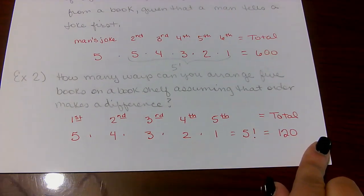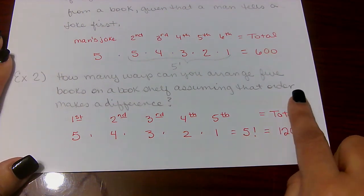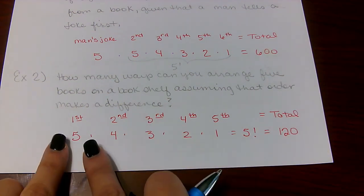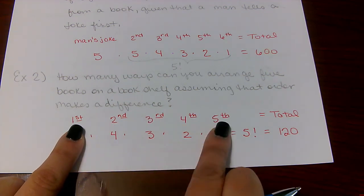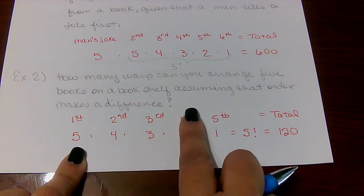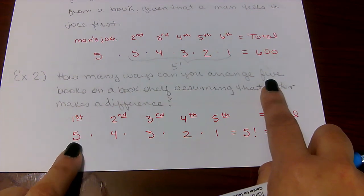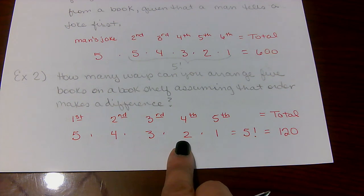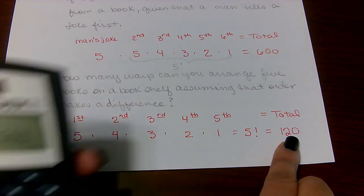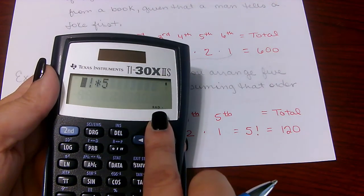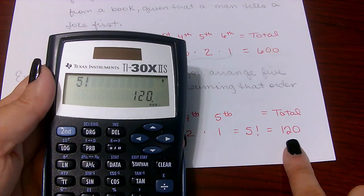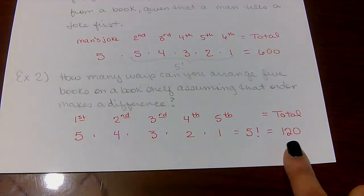Problem two: how many ways can you arrange five books on a bookshelf, assuming order makes a difference? There are five positions. The first position has five options, then four, three, two, and one — that's 5! = 120. In the calculator, enter five factorial and press enter to get 120 ways to arrange these five books.